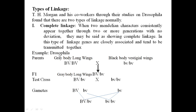For example, in Drosophila two linked characters have been identified. First is grey body with long wings — whenever there is a grey body, the wings will be long, because both genes are linked. Similarly, black body with vestigial wings are linked characteristics in Drosophila.